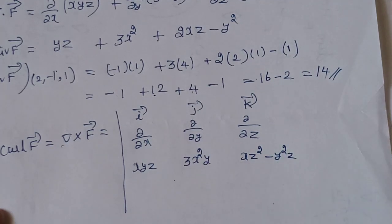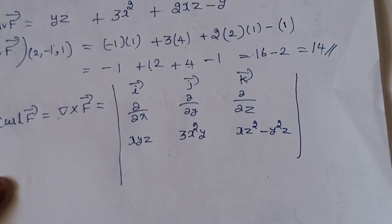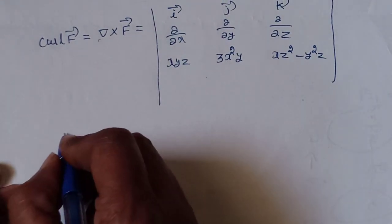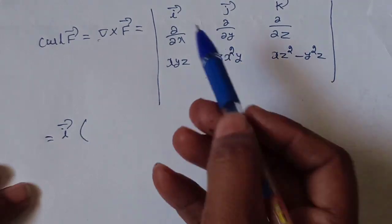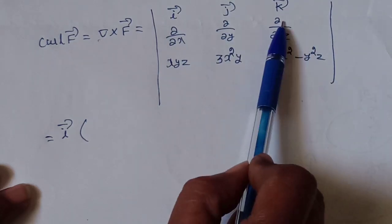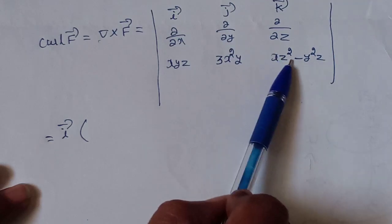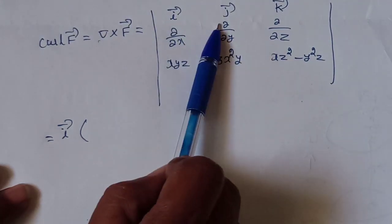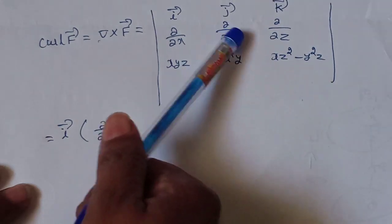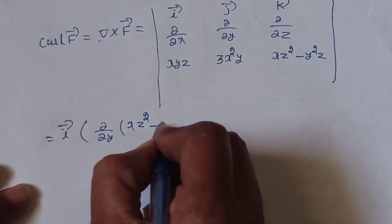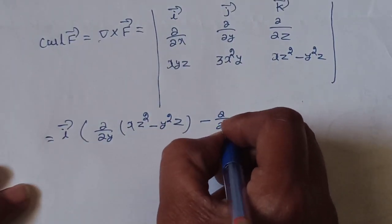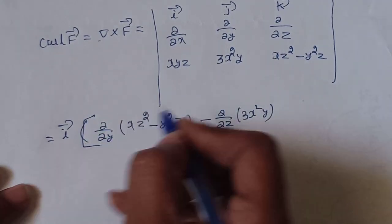Let's evaluate the 3×3 determinant. For the first row, i-vector times the remaining 2×2 determinant — product of main diagonal minus product of off-diagonal. Main diagonal: d/dy of (2x²z minus y²z). Off-diagonal: minus d/dz of (3x²y). This gives the i-vector component.